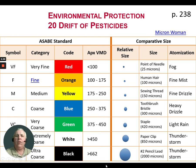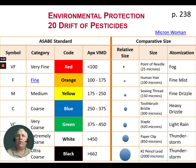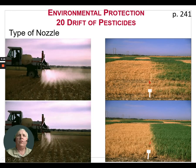We have to consider what droplet size is necessary to satisfy the label requirements to control the pests we're going after. There are times when we do want a very fine droplet size; however, we know that the finer the droplet size, the more drift potential we have.